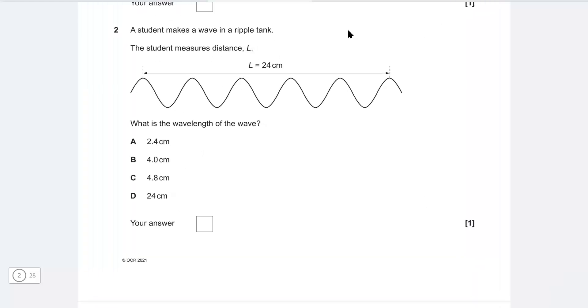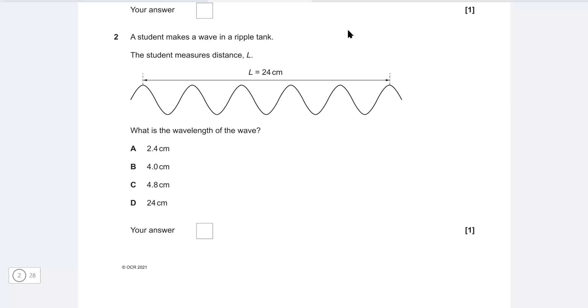Okay well let's have a look at the first multiple choice question. A student makes a wave in a ripple tank and we have some distances here. So this entire distance is 24 centimeters.